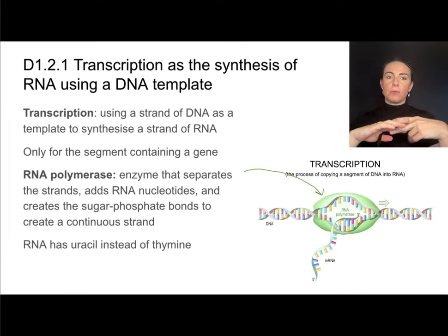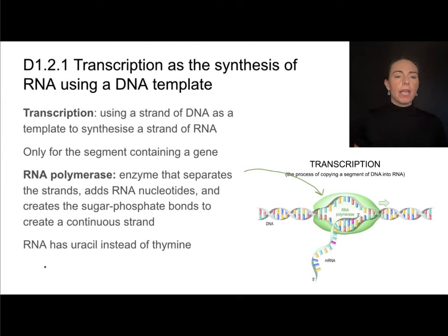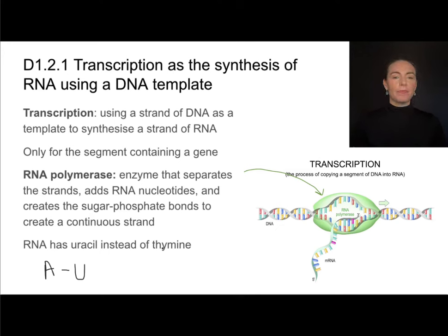It also connects the RNA nucleotides together by creating sugar phosphate bonds — those phosphodiester bonds — to create one continuous strand of mRNA. One important thing to note is that when we think about complementary base pairing in RNA, adenine does not pair with thymine. Instead, adenine pairs with uracil. So RNA won't have any thymines; it still has cytosine, which is complementary to guanine.